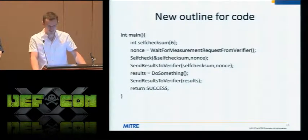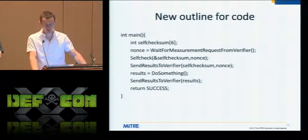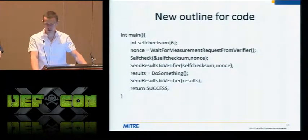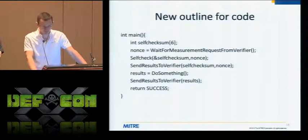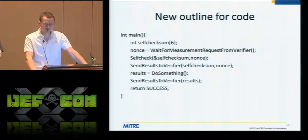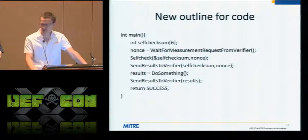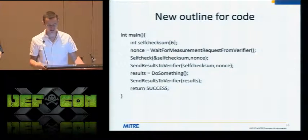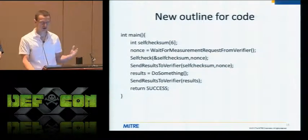Our framework looks like this. We have our checksum waiting for a request from a verifier — some type of server. It gets the nonce from that server, which signals the server wants a test of integrity so it can know whether to believe measurements sent to it. It does a self-checksum based on that nonce and sends the results back to the server.